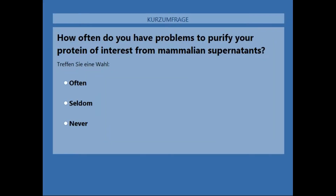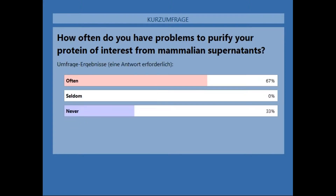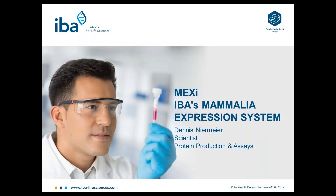Then I have a second question to the audience, related to purification. How often do you have problems purifying your protein of interest from mammalian supernatants? Often, seldom, or never? We see that many people have problems purifying their protein of interest from mammalian supernatants, and another third has never had problems. This is typical for many labs, and we have experienced that some proteins have problems being purified with mammalian expression systems.